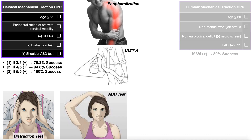The fifth criterion is the shoulder abduction test. The patient is going to actively abduct their shoulder and place the hand on top of the head — that's the true shoulder abduction test. If that reproduces the patient's symptoms, particularly neck pain or any peripheralization symptoms into the upper extremity, that's a positive shoulder abduction test.